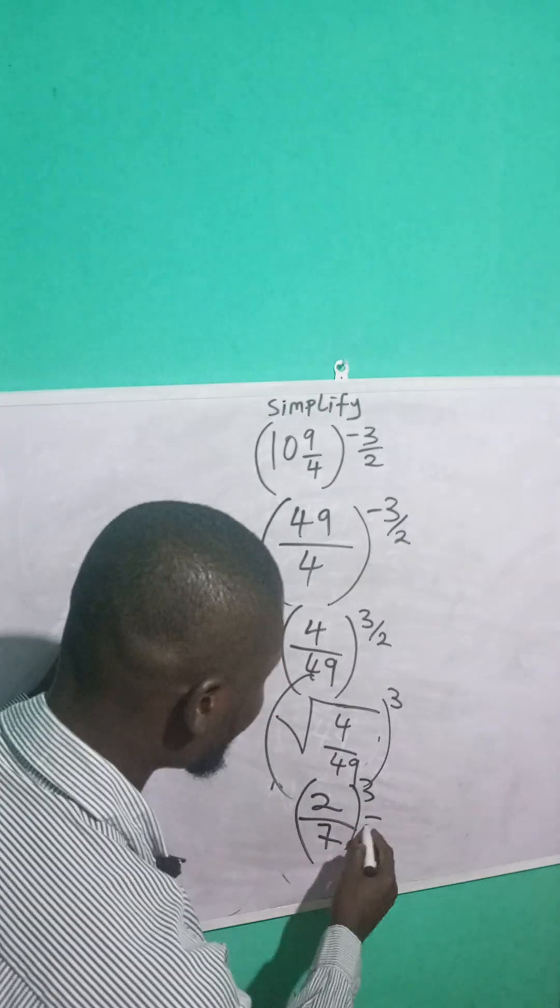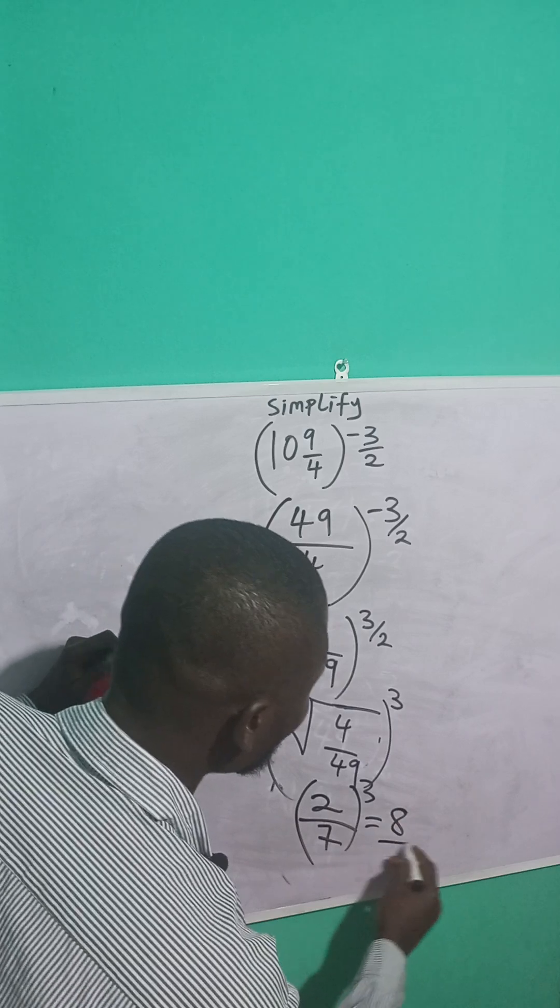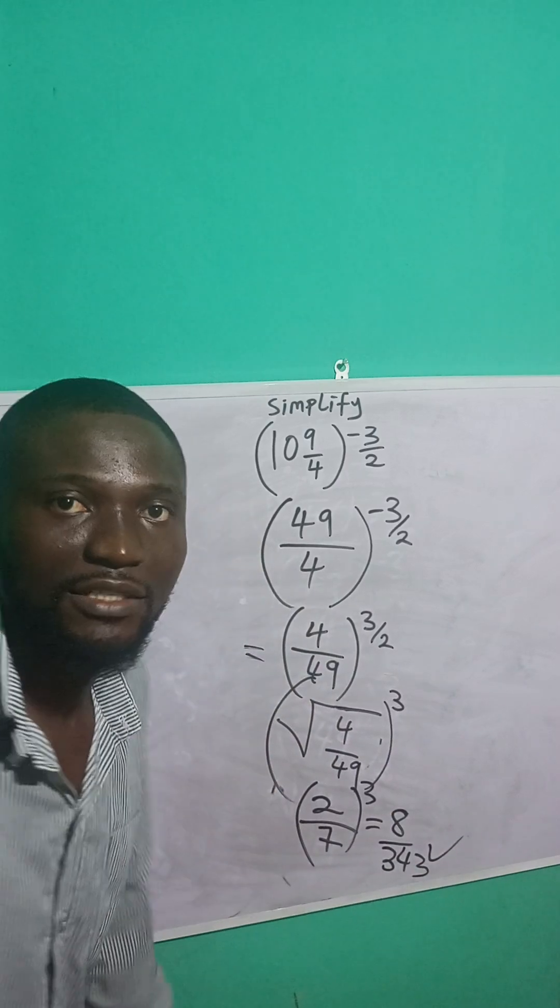This is the same as 2 raised to power 3. 2 raised to power 3 is what? 8 over. 7 raised to power 3 is what? 343. And this is your answer.